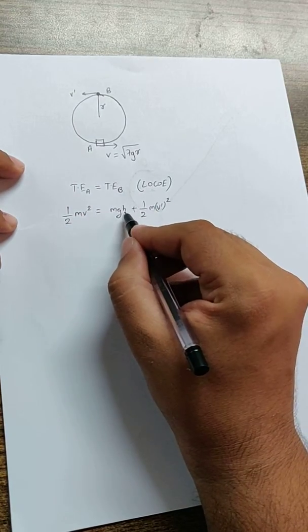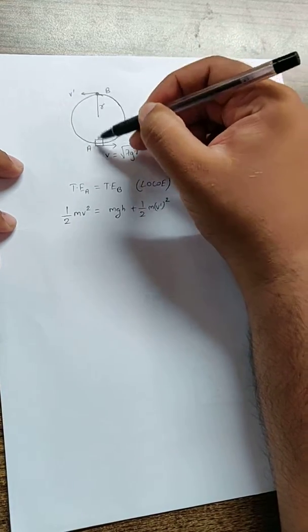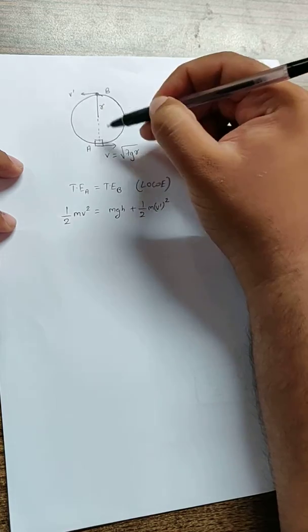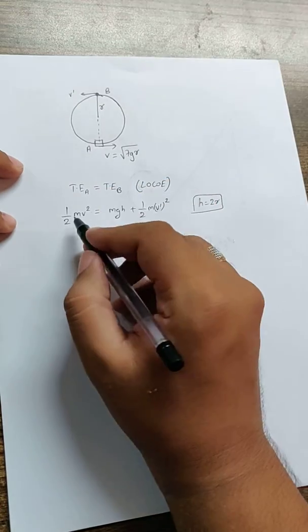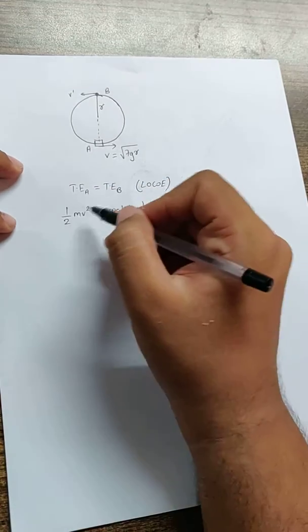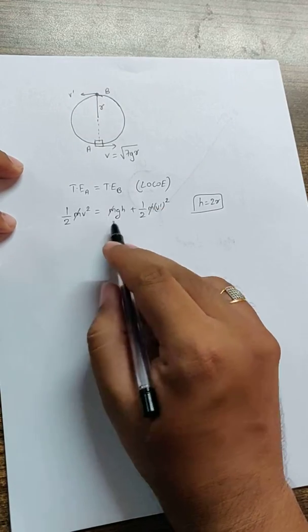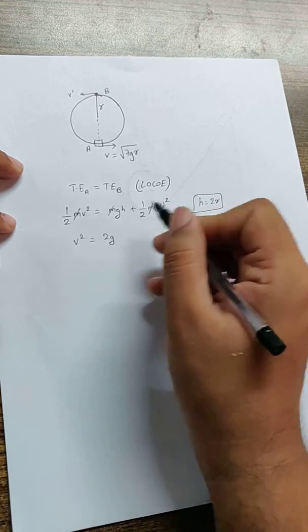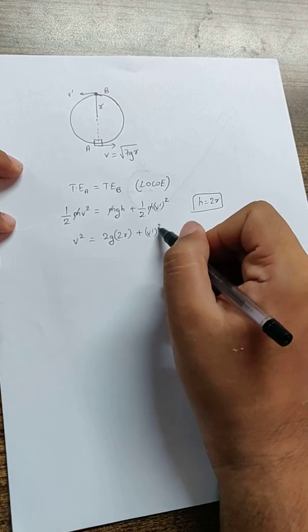Now here, H is something which is very interesting. H is the distance between point A and B, the displacement I should say, which is nothing but the diameter of the circle, which is nothing but 2r. So remember, H over here is 2r and definitely before substituting that H, I can cancel this M throughout and multiply by 2 throughout will give me V square is equal to 2g. Instead of H, I can substitute 2r plus V dash square.